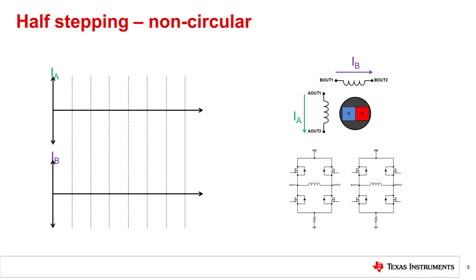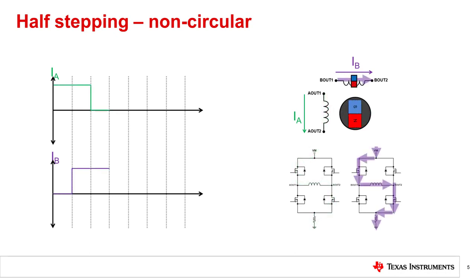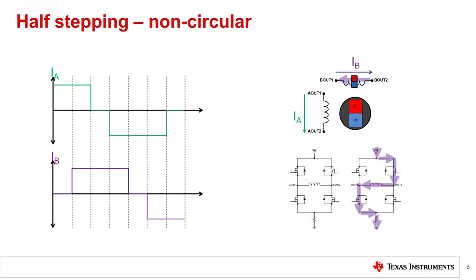Stepper drivers can use half-stepping to achieve rotor positions at intermediate locations between full steps. This plot shows the currents in the stepper windings using a technique called non-circular half-stepping. The animation shows how the stepper rotor would rotate with non-circular half-stepping. Between the full step locations, the motor aligns directly with the energized phase while the other phase is de-energized. This is a simple way to achieve intermediate half-steps by turning off the H-bridge outputs for one of the stepper phases before switching the magnetic polarity of that phase.